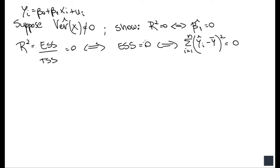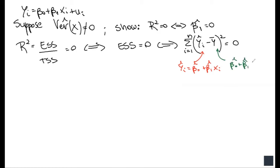The explained sum of squares is going to be equal to zero if and only if all of those terms are equal to zero. To proceed, let's replace ŷᵢ with what we know: ŷᵢ = β̂₀ + β̂₁xᵢ. We also know from a property proved previously that the regression line always passes through the mean, so ȳ can be written as β̂₀ + β̂₁x̄. Let's substitute both of these facts into our equation.